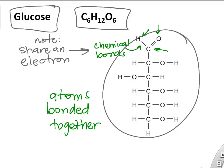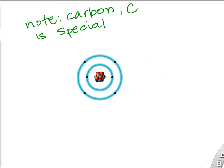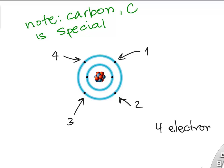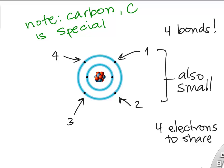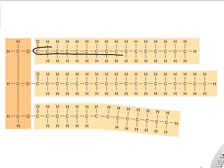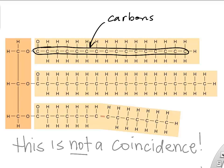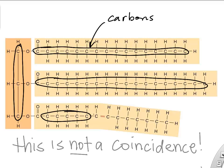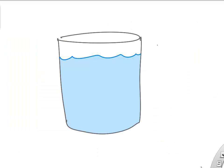Looking at the atomic arrangement of a glucose molecule, you can see carbons bonded to oxygens and hydrogens — six carbons, twelve hydrogens, and six oxygens. What's special about carbon is that it has six electrons, but its four outer electrons can be shared with other atoms, allowing four chemical bonds per carbon. So carbon becomes the backbone of many molecules in the human body and in all living things.